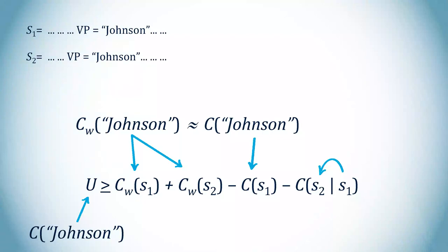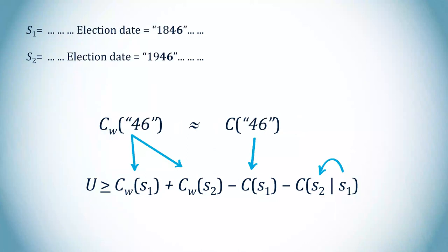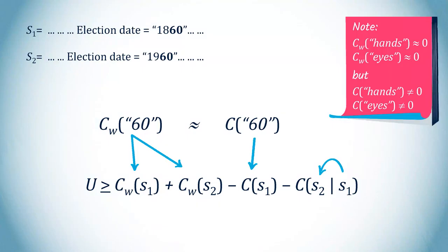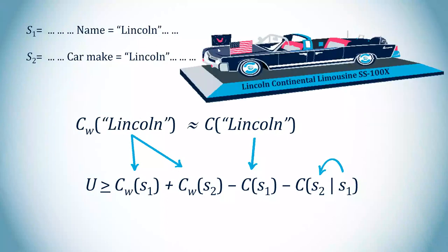This is true of any element that the two situations have in common for independent reasons. The last digits of the election years, 46 and 60, and even the name Lincoln, which is reused to designate Kennedy's car.